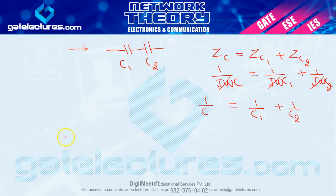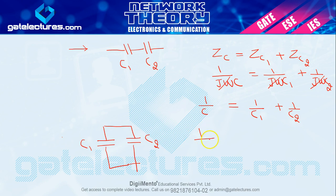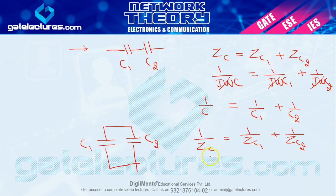For two capacitors in parallel: 1/Z_C = 1/Z_C1 + 1/Z_C2, so jωC = jωC1 + jωC2. Cancelling jω gives C = C1 + C2. So parallel capacitors give a series-resistor-like formula. The operation always happens on impedances — that's why series capacitors look like parallel resistors, and vice versa.